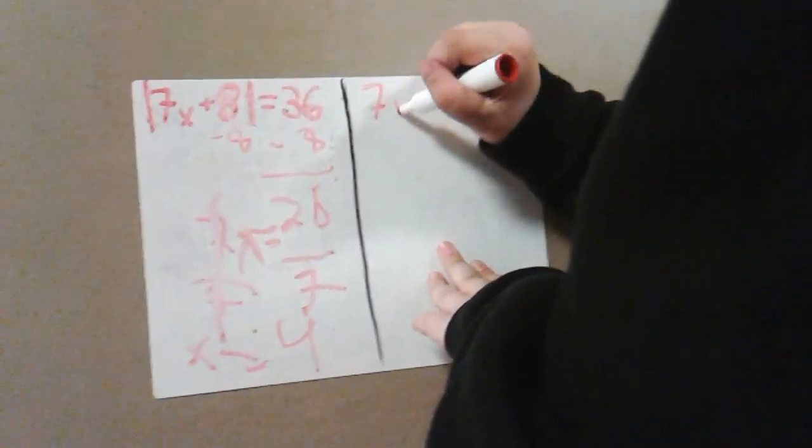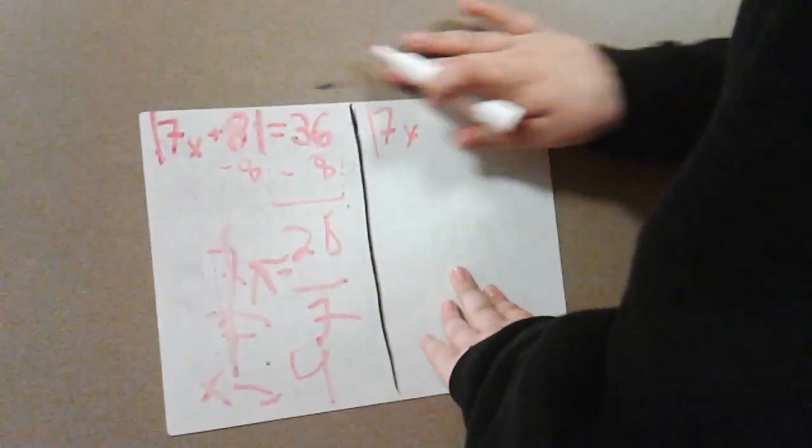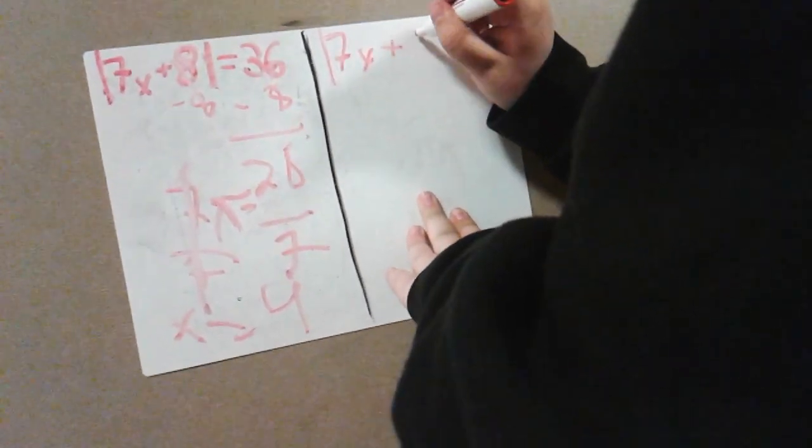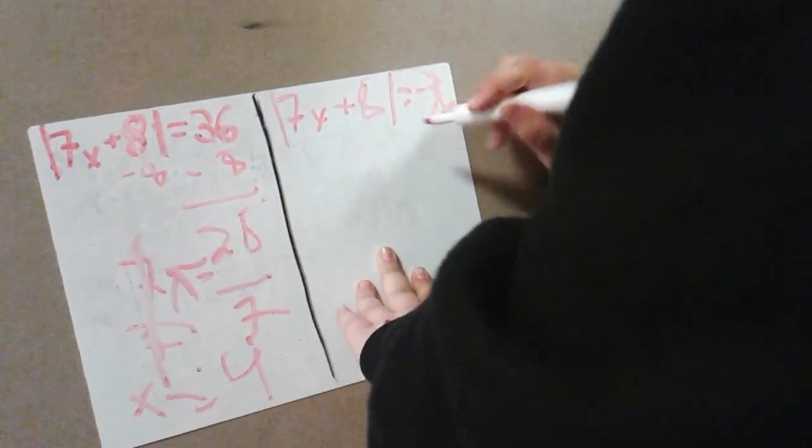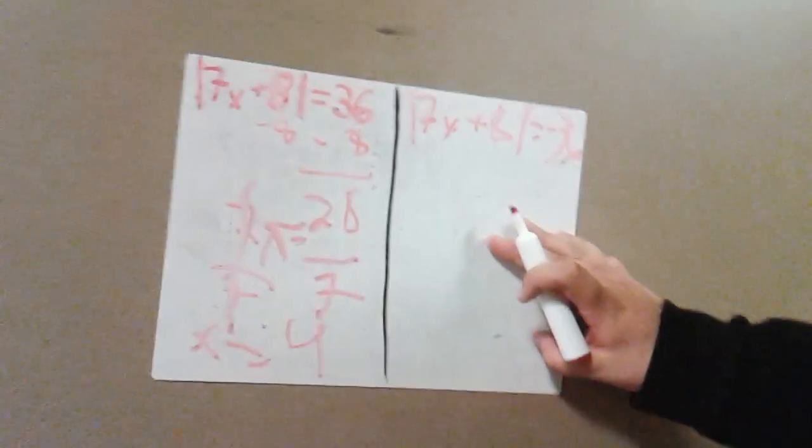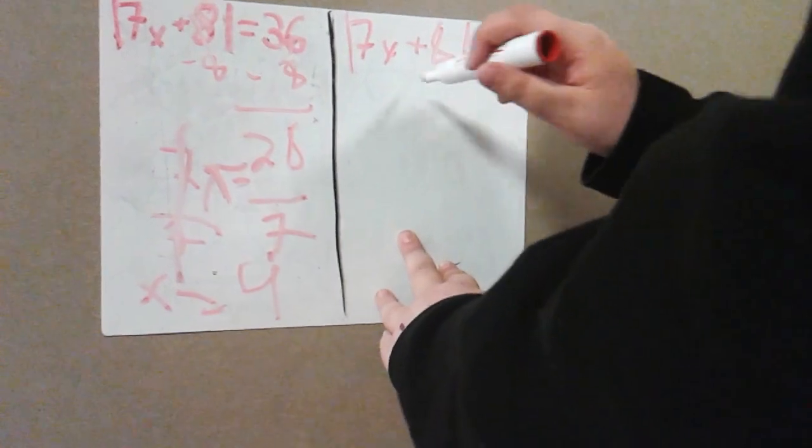Yeah. Okay, so 7x plus 8 equals negative, negative this time. I'm tired. Okay, so do the same thing.